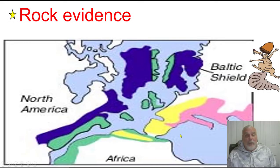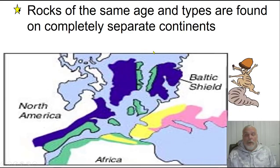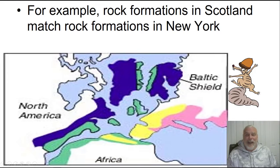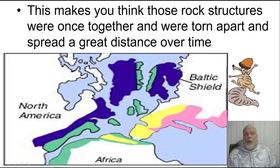Another type of evidence is known as rock evidence. In various parts of the world, you see rocks of the same composition, same mineral mixture, and same age, but they're found on completely separate continents. These blue rock formations all match up in terms of age and rock-type minerals — these green match up, yellow match up. You can see that these formations separated down the middle, with this part going left and this part going right. For example, rock formations in Scotland match rock formations in New York, making you think these rock structures were once together and were torn apart over time.